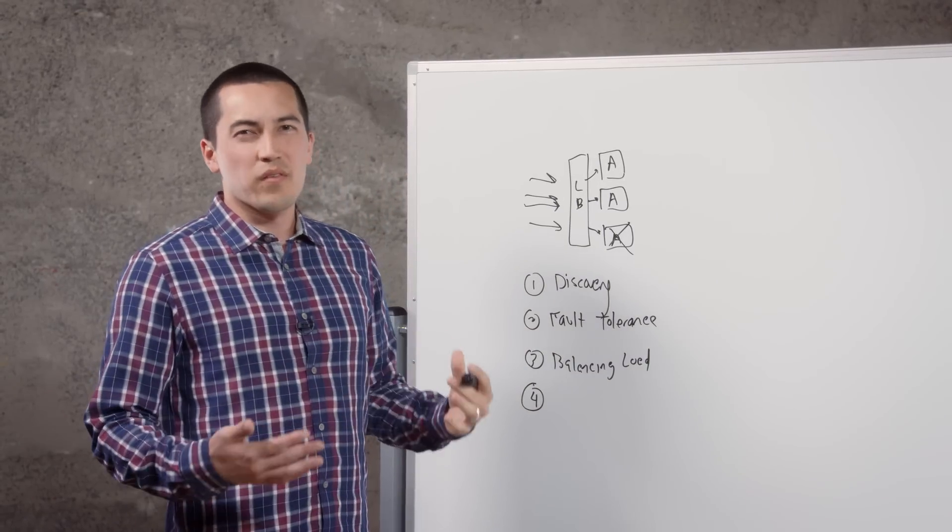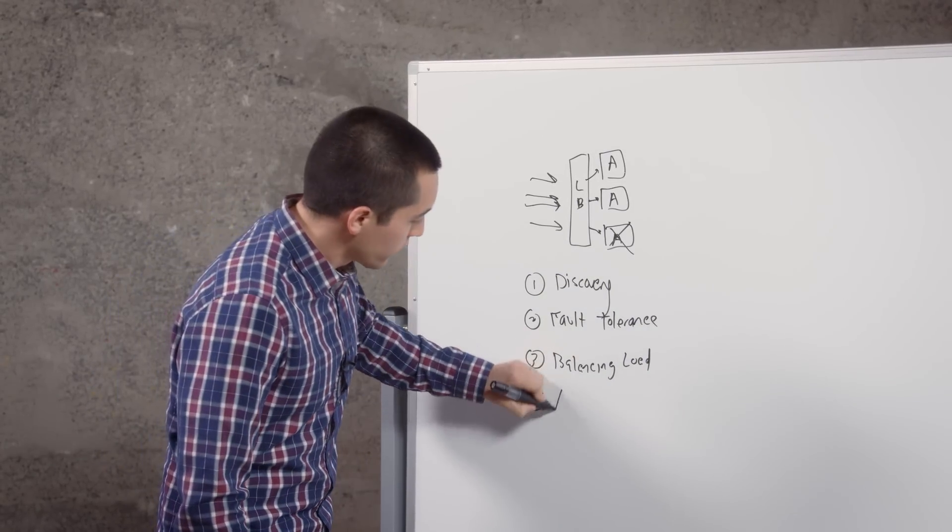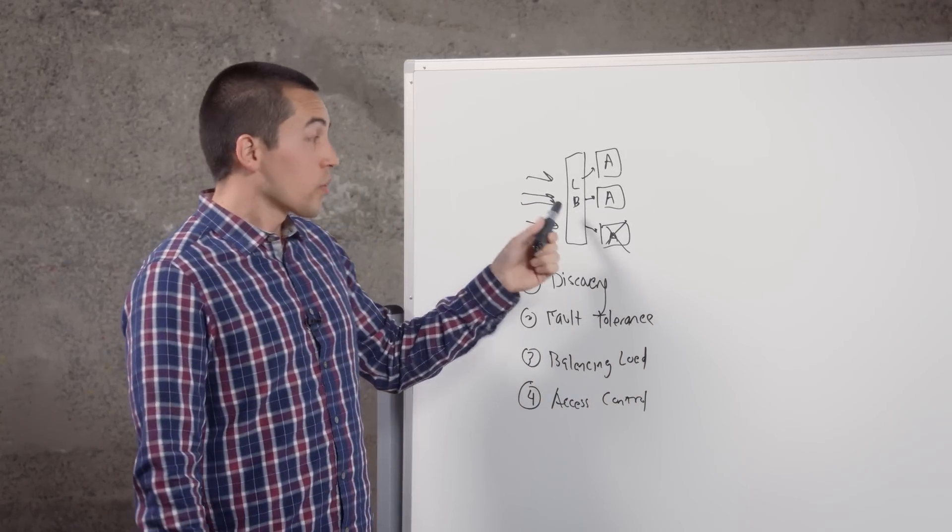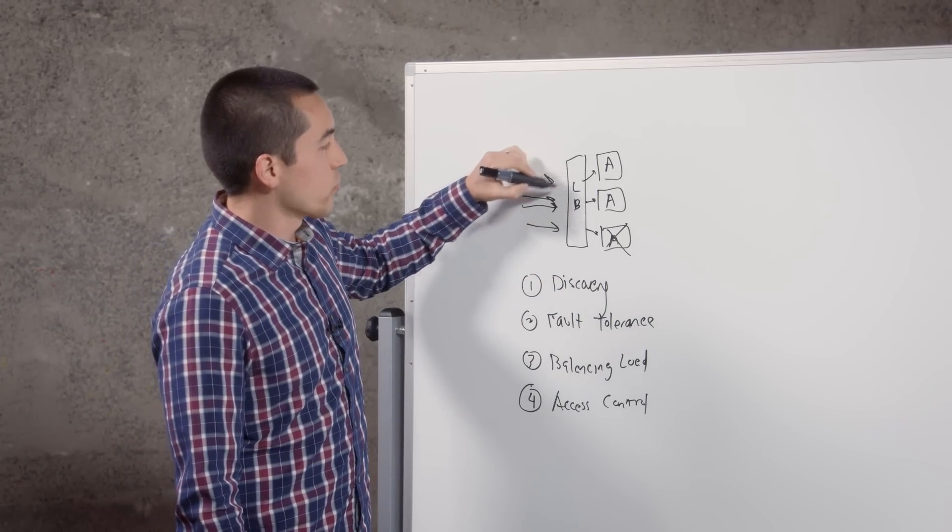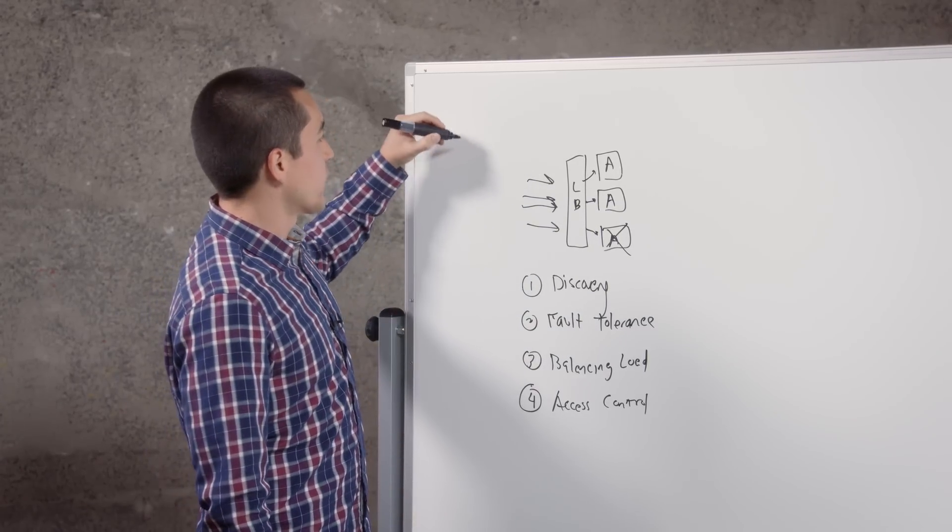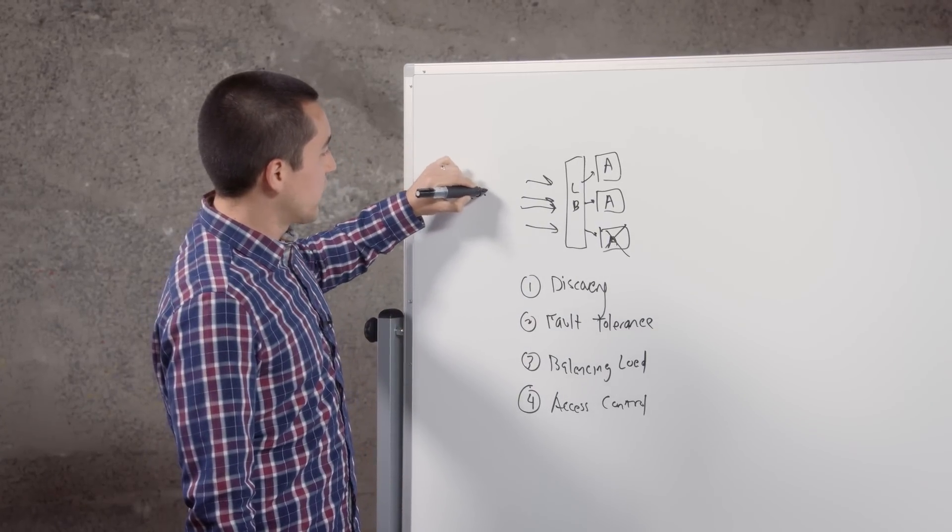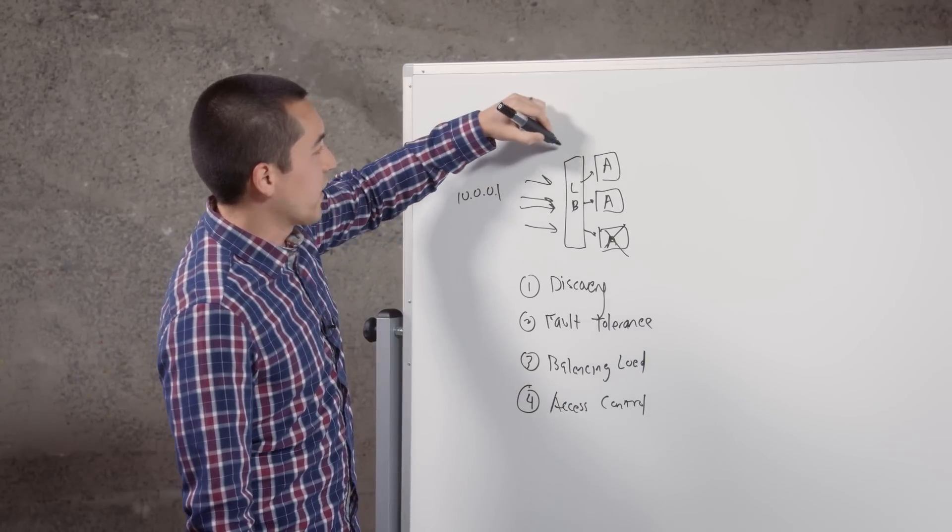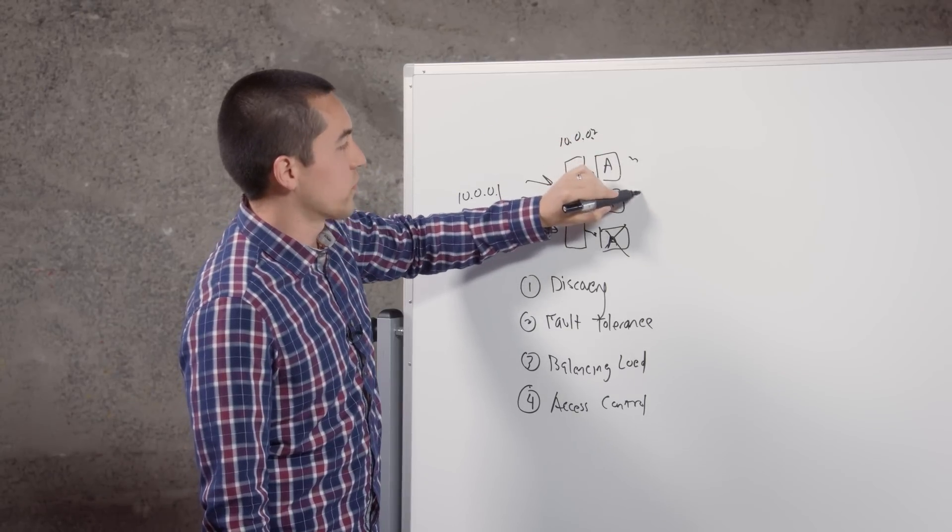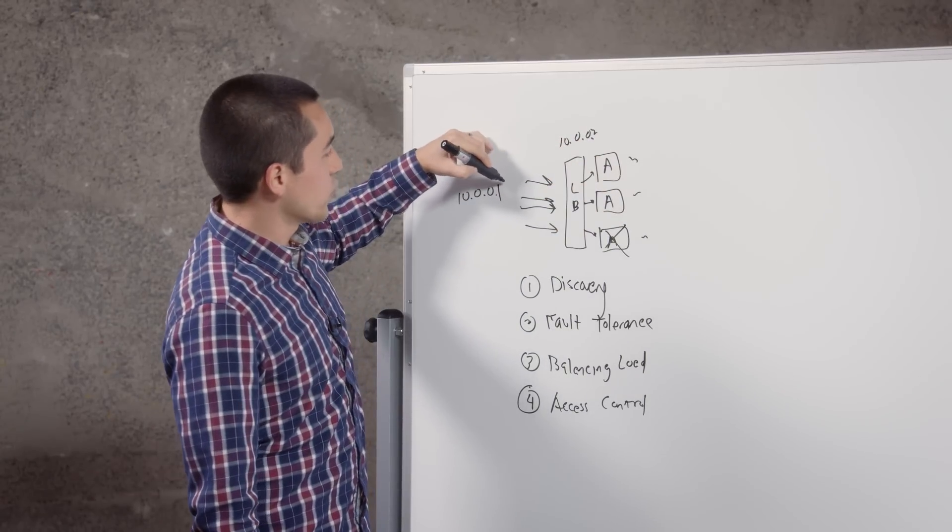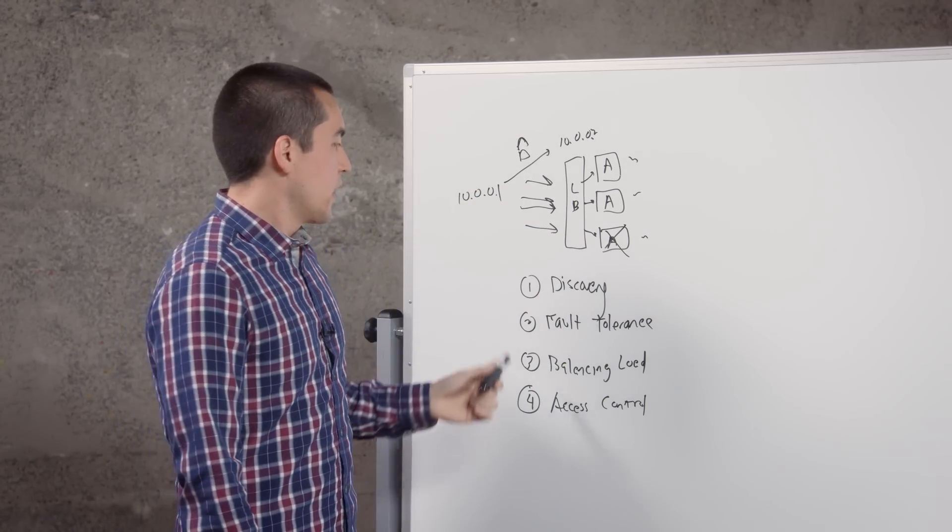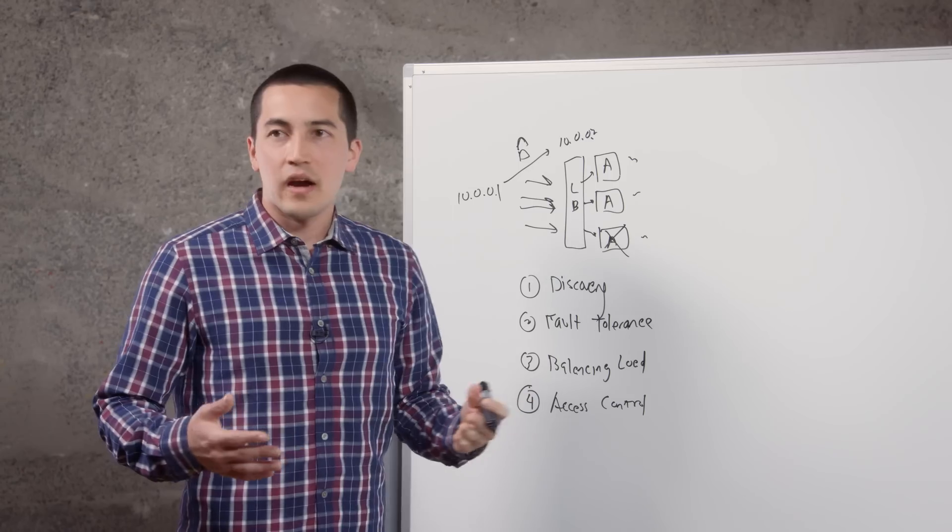And then the last reason that you want to use this is some level of security or access control. A load balancer gives you a central point to enforce some sort of access control, usually traditional IP-based access control. You're saying 10.0.0.1 can access 10.0.0.2, and these are maybe on some other IPs over here, but this access control is here so that you could lock it down and say who could access one.